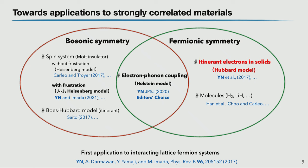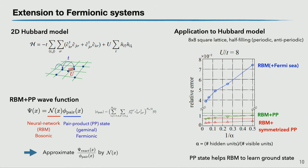Let me start with the extension to fermion systems — please refer to the paper if interested. We applied this to the two-dimensional Hubbard model, which is a very fundamental model that may be important for describing high-Tc superconductivity in cuprates. Our idea is to combine the neural network with a fermion wave function. The neural network part is based on the RBM, combined with fermion wave functions. Because the fermion wave function is a Slater determinant, it is anti-symmetric. By combining the anti-symmetric and symmetric wave functions, the total wave function becomes anti-symmetric, so we can apply this to fermion systems.